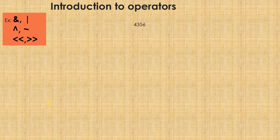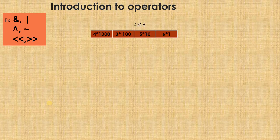So what does this mean? You must have studied in your elementary school — 6 is in the units place, 5 is in the tens place, 3 is in the hundreds place, and 4 is in the thousands place. So the number 4356 can be written as 4 into 1000 which is 4000, plus 3 into 100 which is 300, plus 5 into 10 which is 50, plus 6 into 1 which is 6.